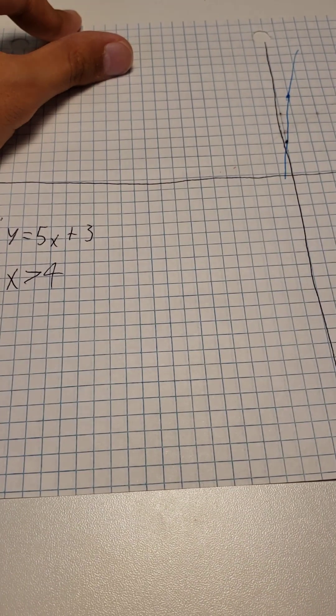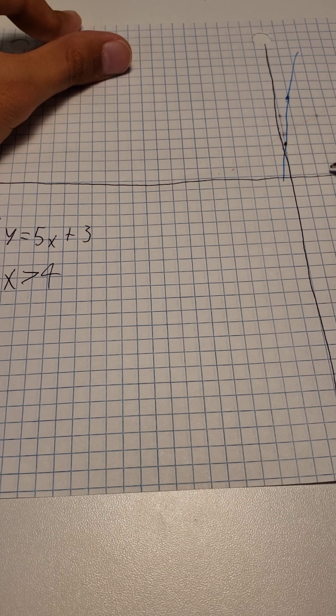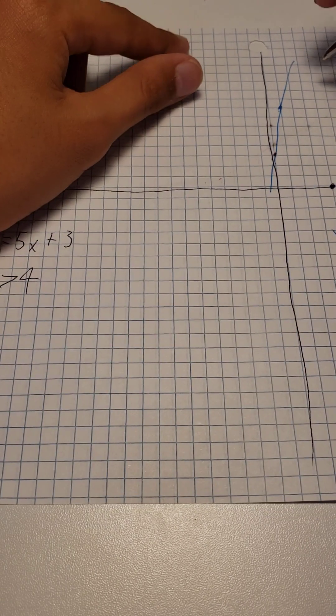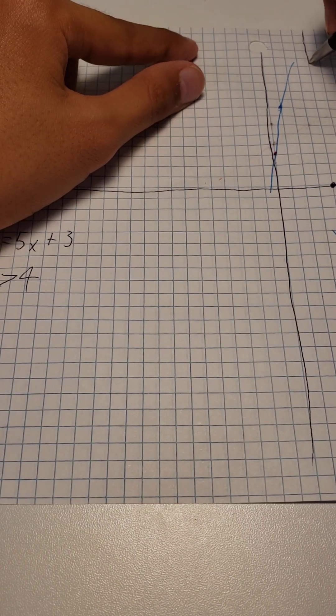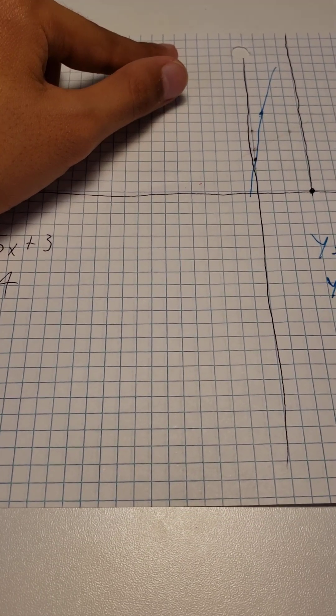So, as x is greater than 4, let's draw 1, 2, 3, 4. And our line will go like this, because the y is constantly changing.